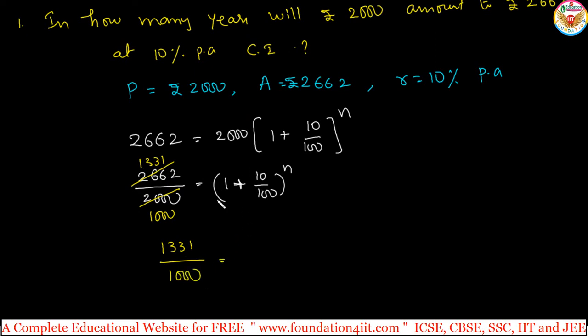Do not cancel more. Let us simplify the RHS also. 1 plus 10 by 100 - simplifying, 10 by 100 is 1 by 10. So 1 plus 1 by 10 is 11 by 10, all to the power n. Now you can check: 11 by 10 is the base on the RHS.